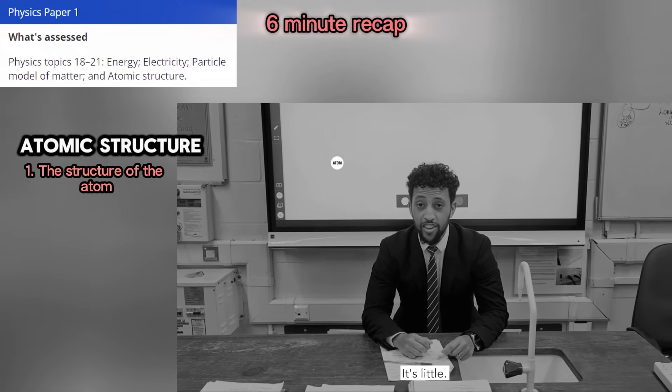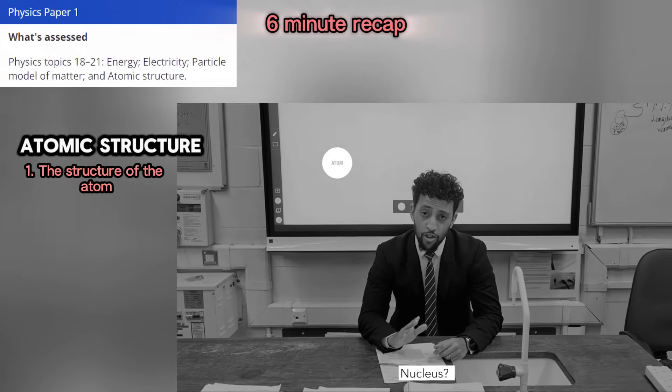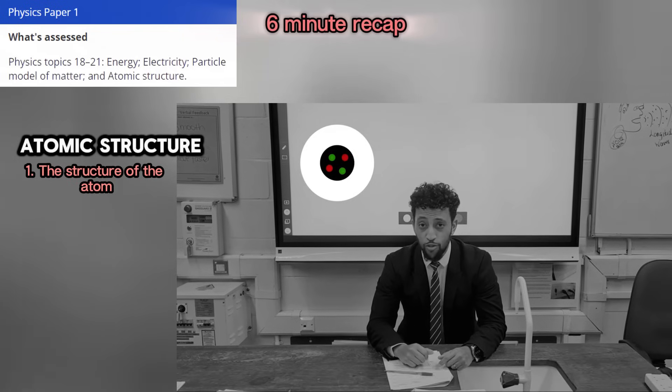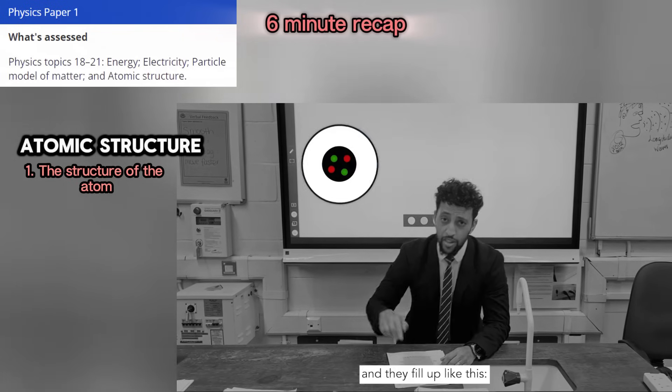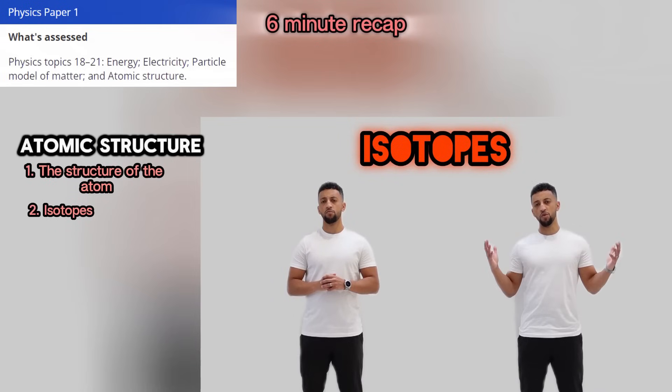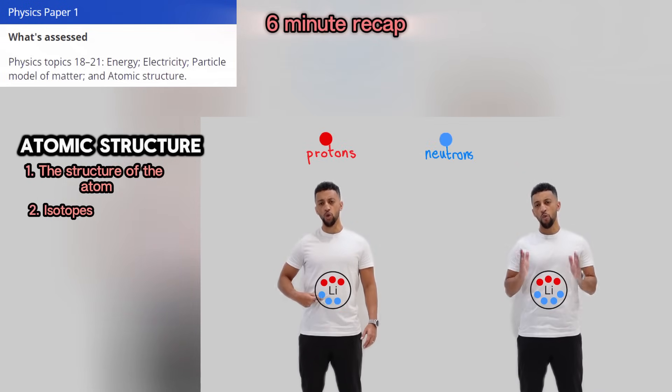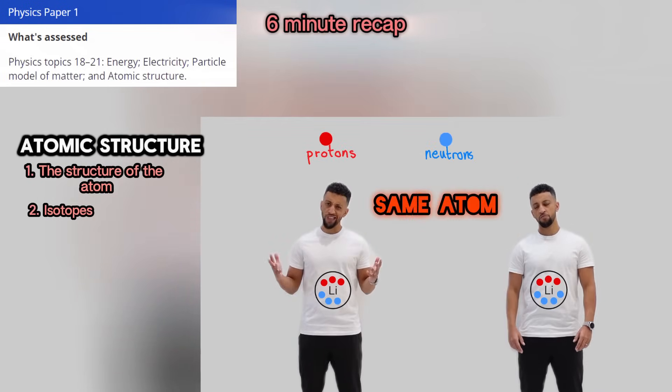The atom is little as usual. Nucleus in the middle as usual. Protons and neutrons, that's where they live. Electrons are in shells and they fill up like this. Protons are red, neutrons are blue.